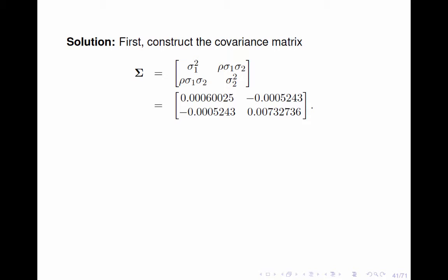First, given the volatilities of the two assets' returns and their correlation coefficient, we can construct the covariance matrix as follows.